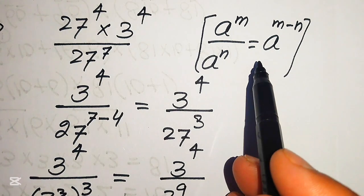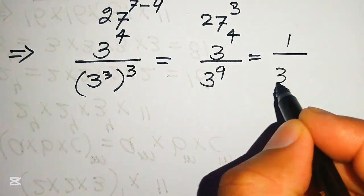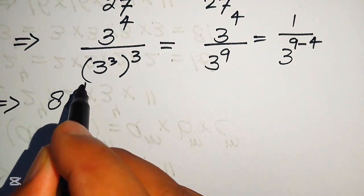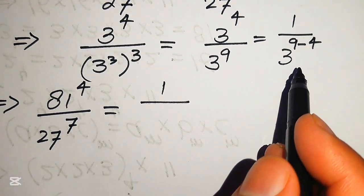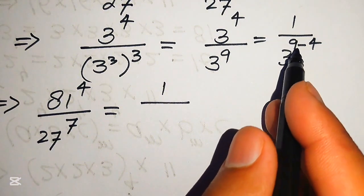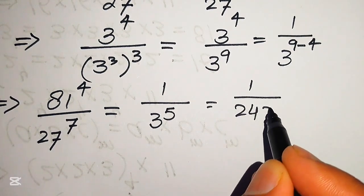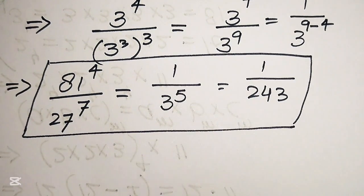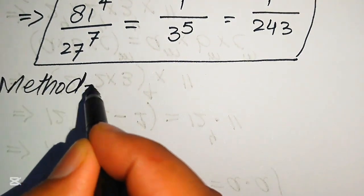Applying the exponent law again, we move the smaller exponent to the bigger side, giving 1 over 3 to the power of 9 minus 4. Since 9 minus 4 equals 5, we get 1 over 3 to the power of 5. And since 3 to the power of 5 equals 243, the final answer from Method 1 is 1 over 243. Now we move forward to the second method.